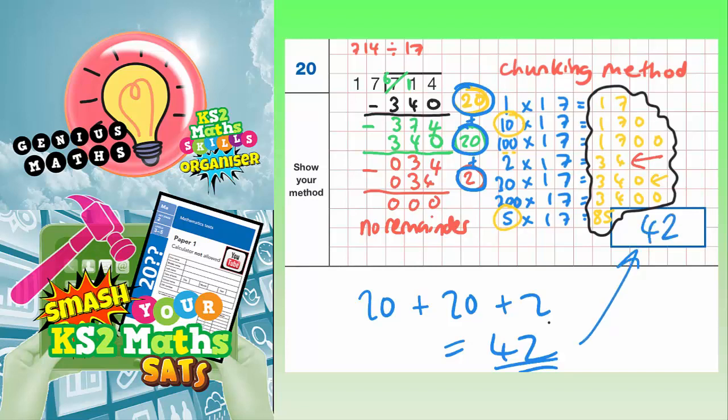Just a quick recap. I kept subtracting chunks of 17s from 714. And I had a chunk of 20, a chunk of 20, and a chunk of 2, which makes all together 42 lots. 42 lots of 17 make 714. Final answer, 42.